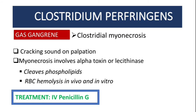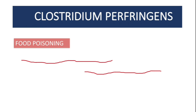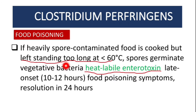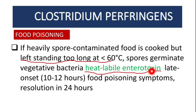The second condition caused by Clostridium perfringens is food poisoning. This happens when heavily spore-contaminated food is cooked but left standing for too long at a temperature less than 60 degrees Celsius. The spores will germinate and release a heat-labile enterotoxin, causing a late-onset diarrhea. Importantly, this diarrhea does not need antibiotics — it will resolve on its own within 24 hours.